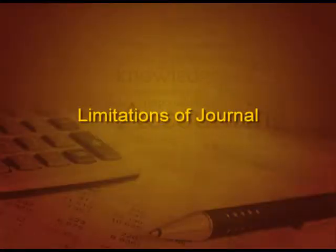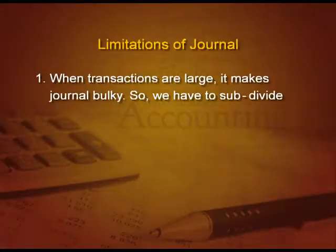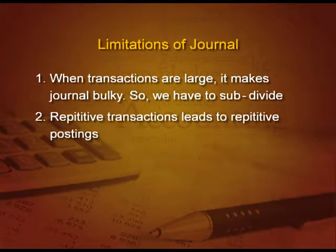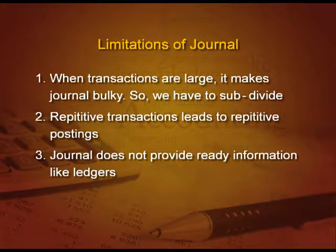If something has advantages, it has limitations also. When transactions are very large, it makes the journal very bulky, so we have to subdivide it into various other books like purchase book, sale book, etc. Next limitation: all these repetitive transactions lead to repetitive postings — for example, cash account coming an umpteenth number of times. Also, journal does not provide ready information like ledger. Suppose I want to know what I have to take from Ram or give to Shyam — in the ledger I can find it easily, but with the journal, I have to locate all those entries, and it is really not possible to get the information quickly.